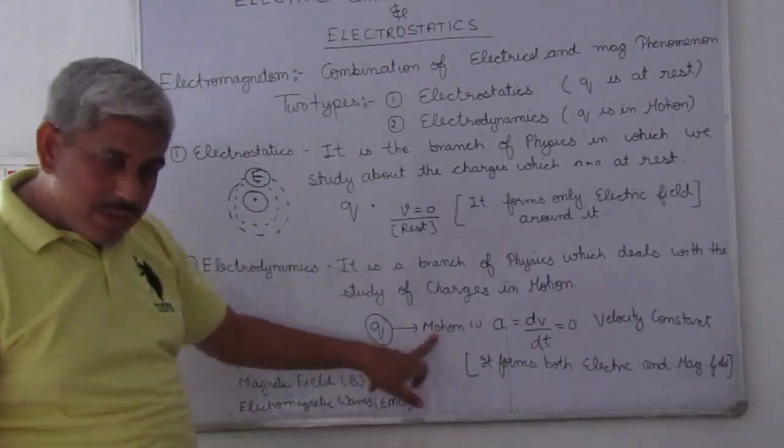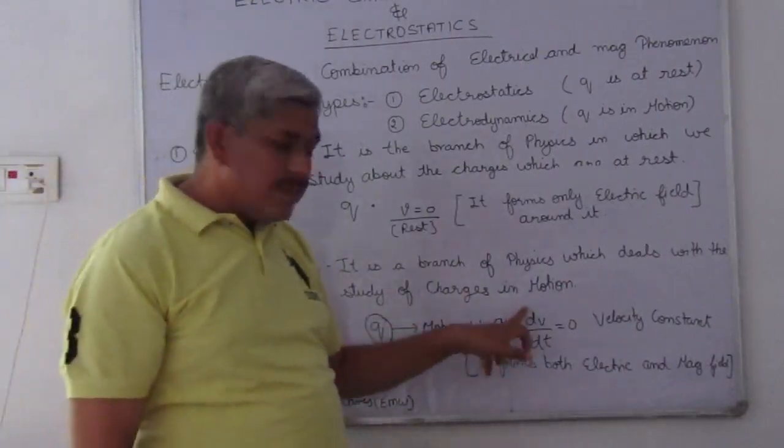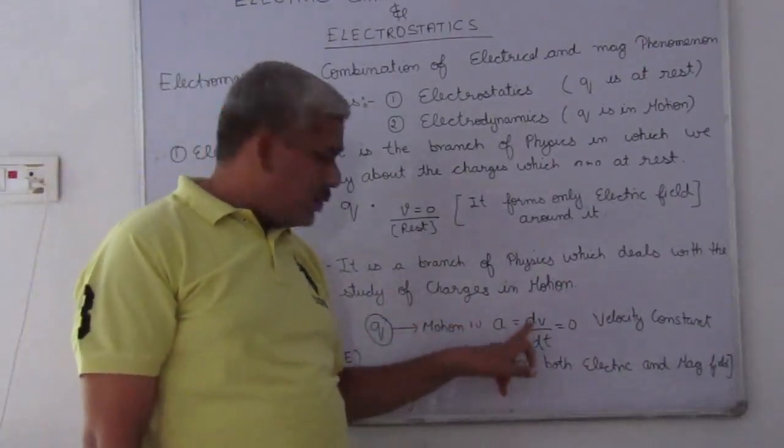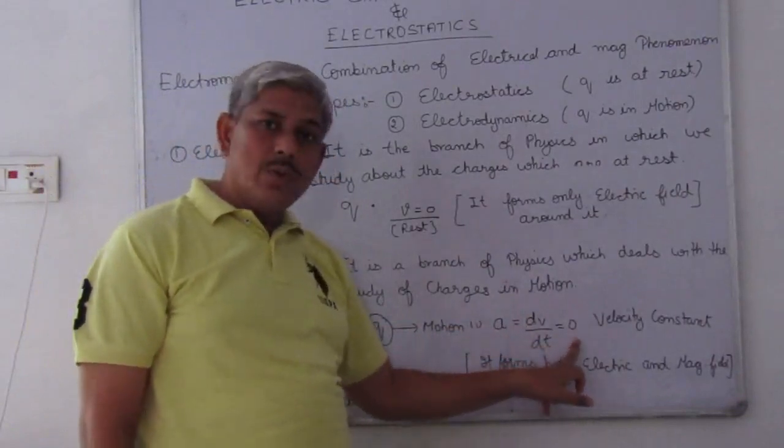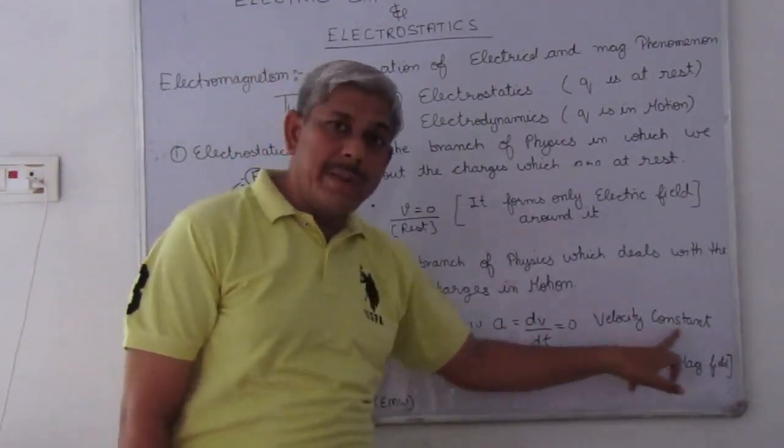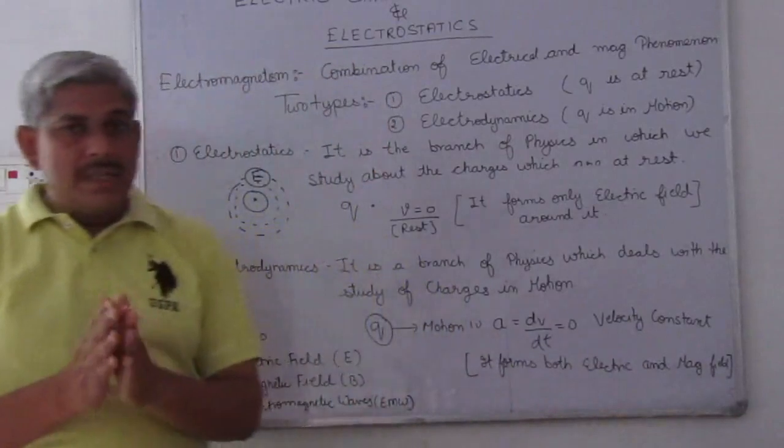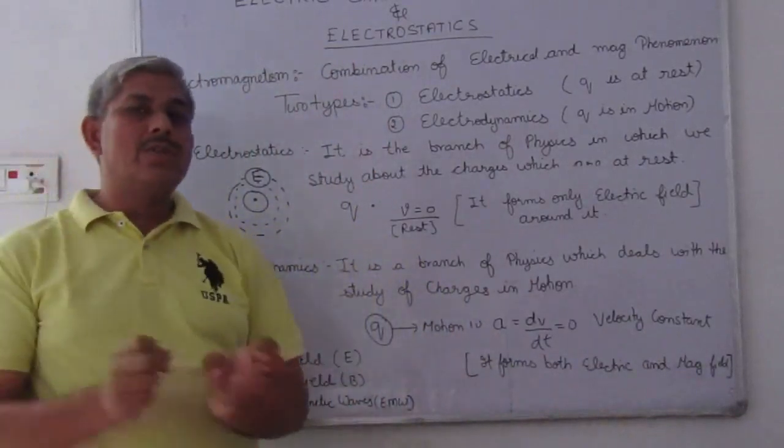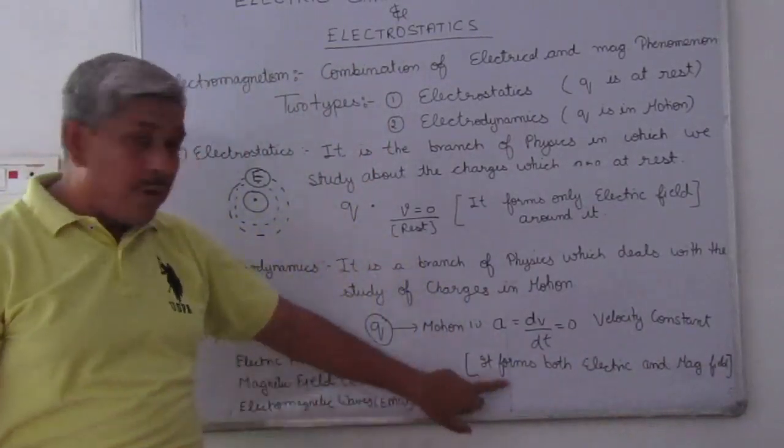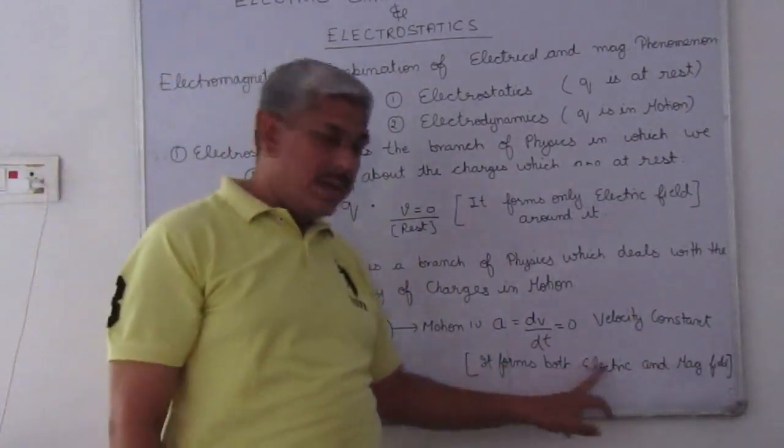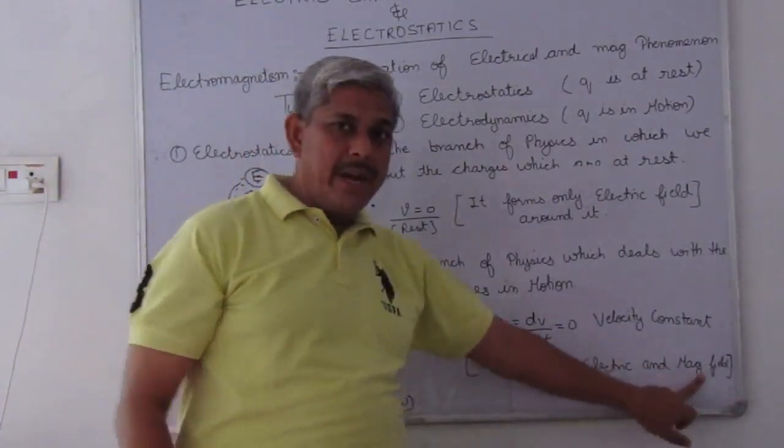Q is in motion. A, that is dV upon dt, velocity upon time equals zero, that means velocity remains constant. When the charge is in motion and the velocity remains constant, it forms both electric and magnetic field.